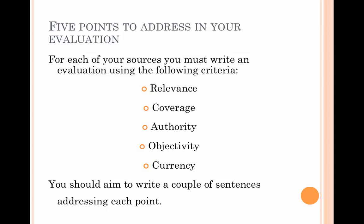There are five points that you must address in your evaluation of each resource included in your annotated bibliography: relevance, coverage of the topic, authority on the topic, objectivity in relation to the topic, and currency. You should be aiming to write between one and three sentences addressing each point.